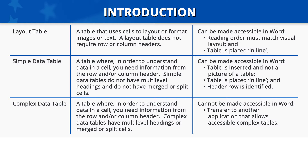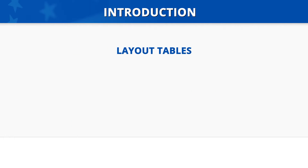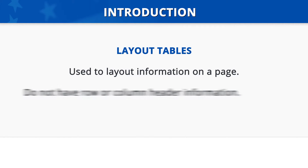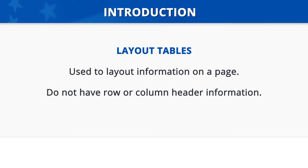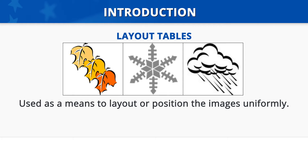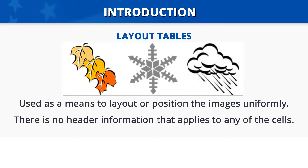Let's make sure we're clear about each of the three types by providing some examples, and then we'll look at accessible and inaccessible examples. Layout tables are just that — tables used to visually lay out information on a page. Unlike data tables, layout tables do not have row or column header information. The example on the screen shows a table with one row and three cells, each containing a clip art image: leaves, a snowflake, and a rain cloud. The table is used to lay out or position the images uniformly across the page, with no header information that applies to any of the cells.